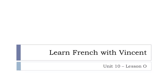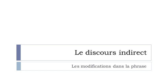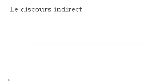Bonjour à tous and welcome to Learn French with Vincent. This is Unité 10, Leçon O. In this lesson we'll see le discours indirect — les modifications dans la phrase. We saw in the two previous videos this discours indirect: how to construct it and the modifications that can happen. If you didn't watch the previous videos, I advise you to do so. Let's do a quick overview: the discours indirect involves combining two sentences with que.